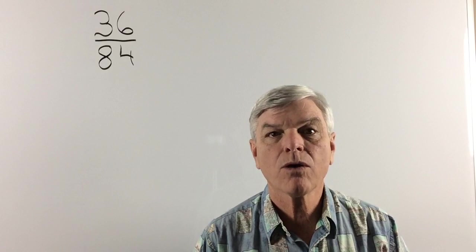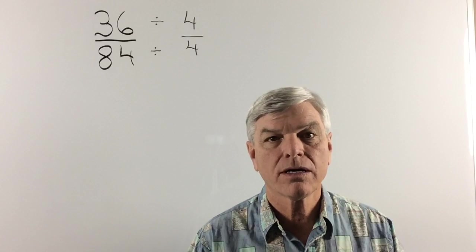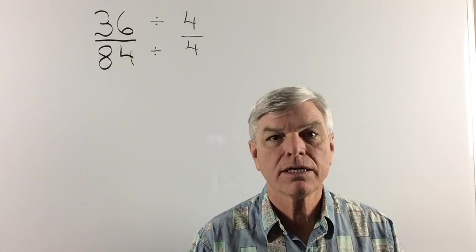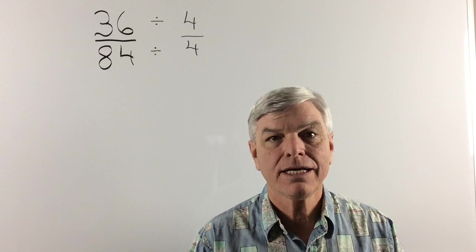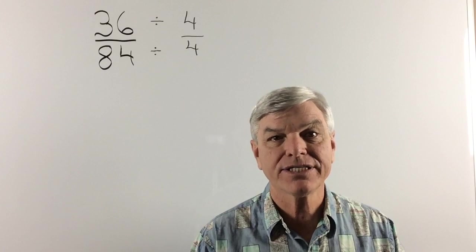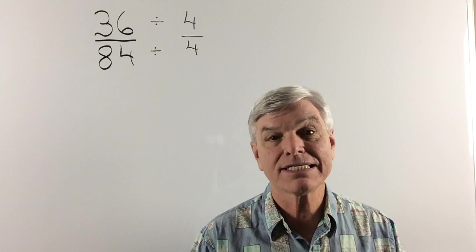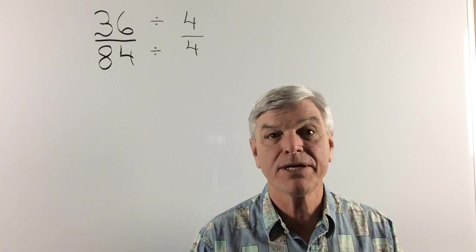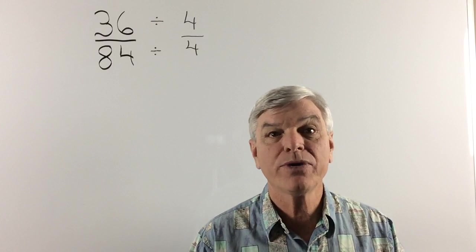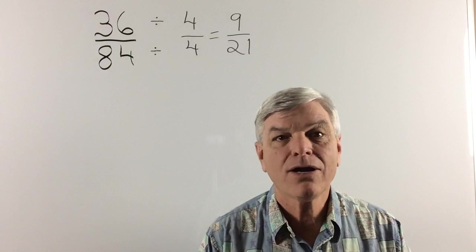So to get these numbers lower, we're going to divide both the top and the bottom by 4. Now 4 over 4 is equivalent to 1. And you can divide any number by 1 and you're not going to change it. It's going to look different, but it's going to be the same number. It's just going to be reduced. And when you reduce it by 4, the answer is 9 over 21.